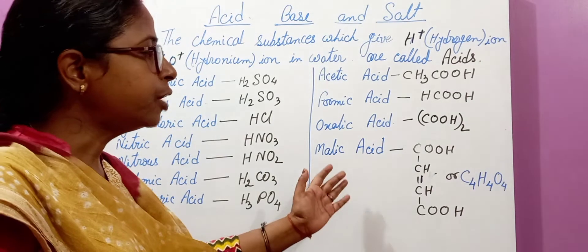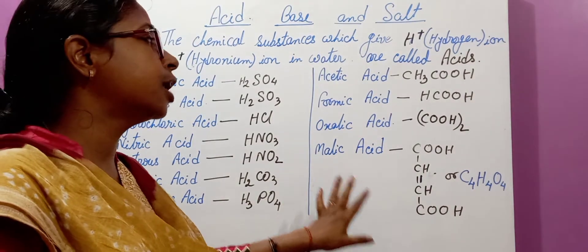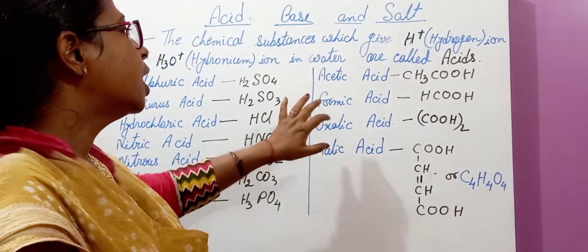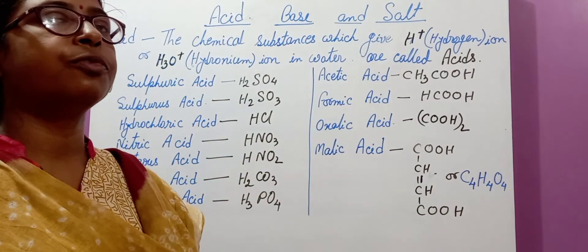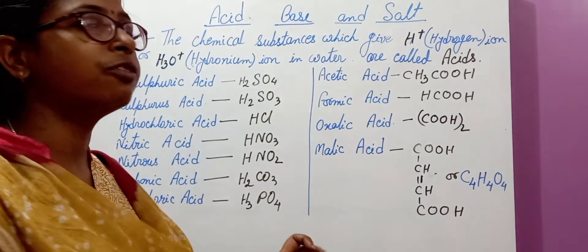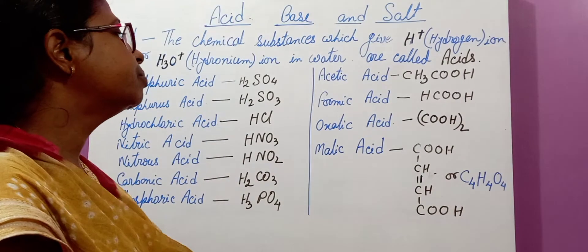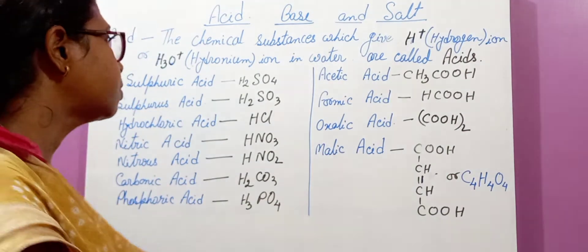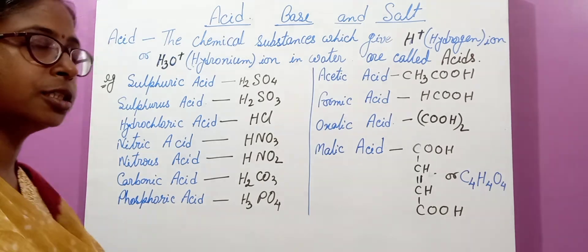Do you know where we get this maleic acid? We generally get maleic acid in apple. This acetic acid we get in vinegar. And this formic acid we get from the body of insects. Oxalic acid we get from sorrel. These are the important acids.